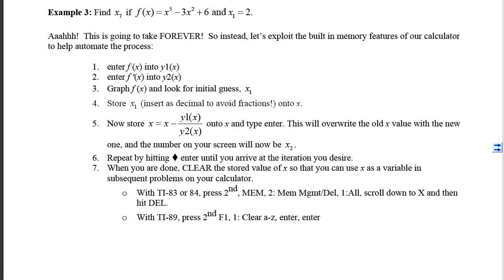With example 3 now, I'm asking you to find x sub 7, which means we would have to repeat the process that we've done in examples 1 and 2 five more times. And that is not the most efficient way to do this. It'll take forever. So instead, we're going to exploit the built-in memory features of our calculator to help automate the process.